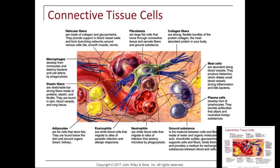Cartilage is avascular, so supplements have to get into adjacent structures first before diffusing into the cartilage. Movement is really important between the joints because movement circulates synovial fluid — the type of fluid located between freely movable joints like the shoulder, elbow, hip, knees, fingers, ankles, and toes. The circulation of synovial fluid brings nourishment to cartilage cells. The more you move, the more synovial fluid circulates, the more cartilage cells regenerate.